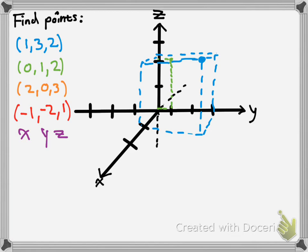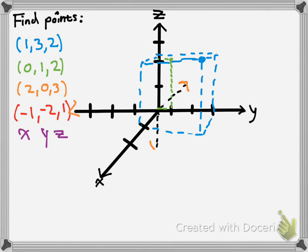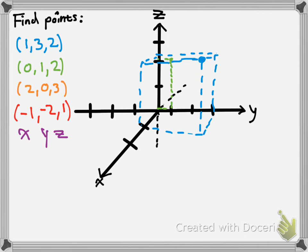Then we have our third point, so that would be 2 on the x-axis. Big note here — see these arrows? That shows the direction in which positive goes. So if I put arrows everywhere, it would be really confusing on which way is positive and which way is negative. When you make your graphs, say that direction is positive for the y-values, positive up for the z-values, and when it comes at you, the positive values are here. You don't have to label them all the time.